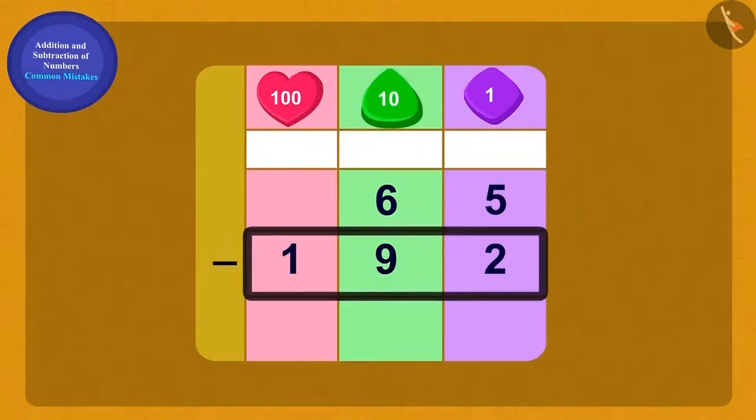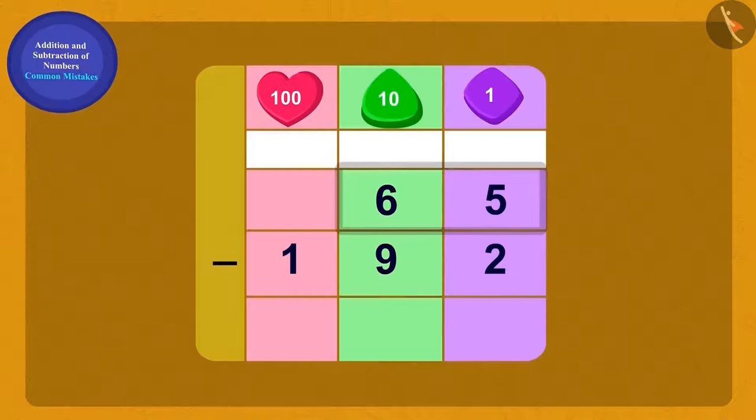Here, the larger number is 192 and the smaller number is 65. So, we will write your question this way.